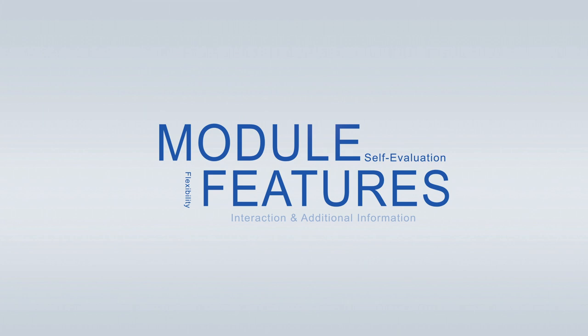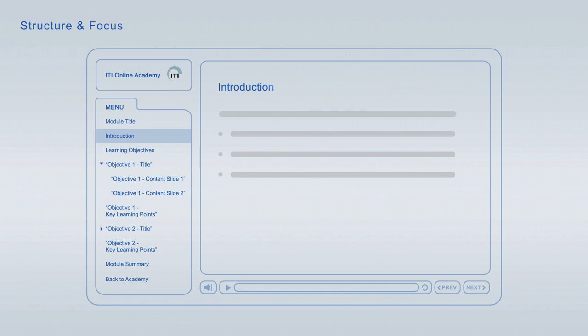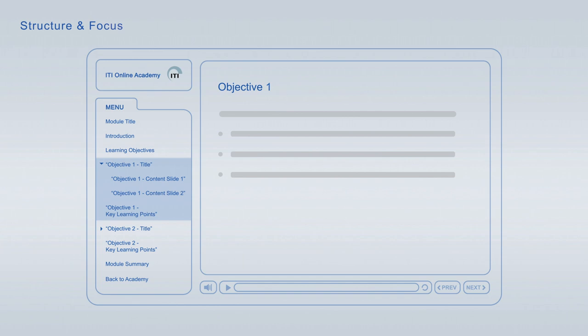ITI Online Academy learning modules offer a wide variety of features to optimise your learning. Every module starts off with an introduction that is followed by the learning objectives, giving you an overview of the main topics and learning goals covered. Each of the learning objectives is discussed in an individual topic chapter that concludes with a list of its key learning points.